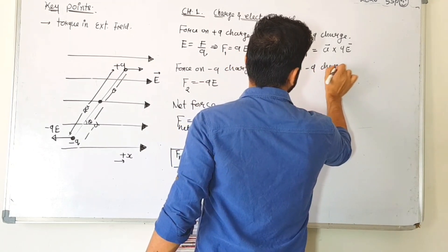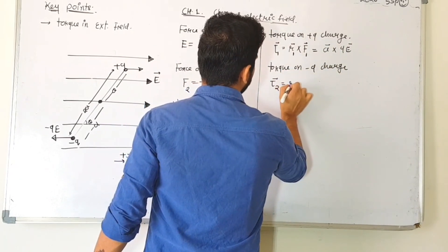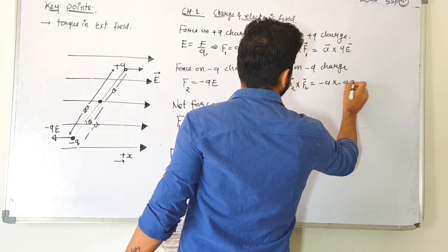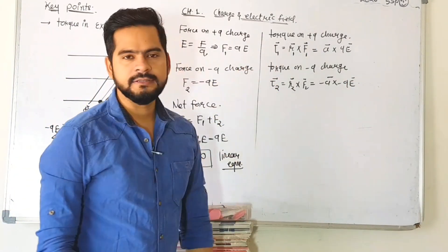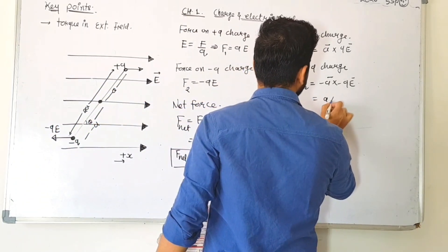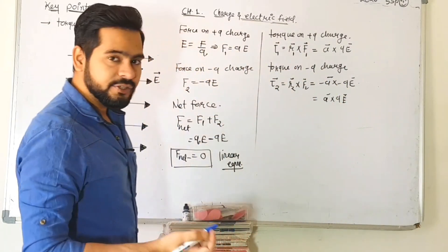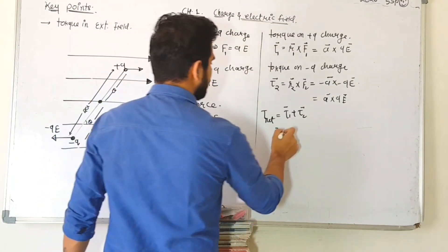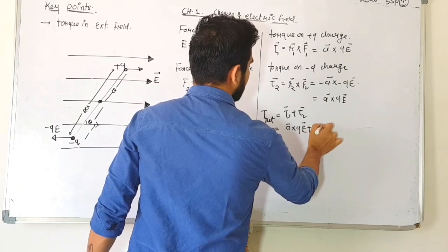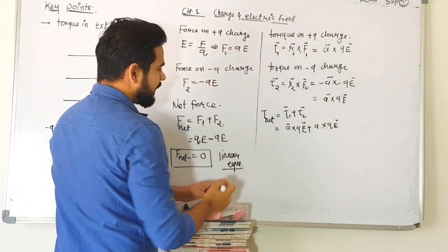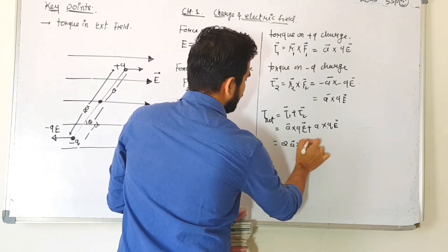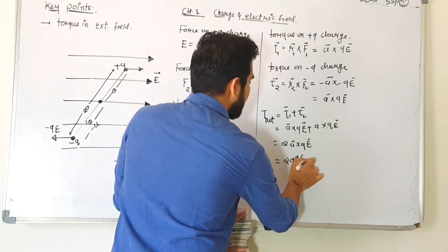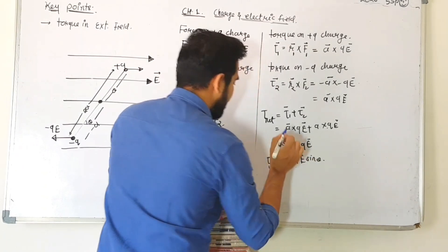Now torque on the negative charge: torque two equals r2 cross F2, which is minus a cross minus qE. Since minus times minus equals plus, this becomes a cross qE. Now net torque equals torque one plus torque two, which gives a cross qE plus a cross qE, so net torque equals 2a cross qE. Since cross is a vector product, the answer becomes 2aqE sin theta.